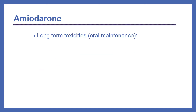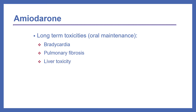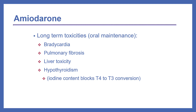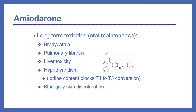There are five long-term toxicities of amiodarone important to remember for patients on oral maintenance: first, bradycardia; second, pulmonary fibrosis; third, liver toxicity; fourth, hypothyroidism — because the iodine content in the drug blocks T4 to T3 conversion, and iodine is part of the drug's chemical structure; and finally, amiodarone can cause a characteristic blue-gray skin discoloration.